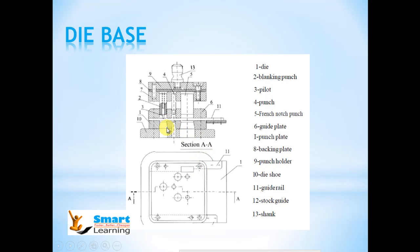You can see few punches here. This is a blanking punch with a pilot in it. This is a piercing punch. This is a notching tool. These are the fasteners which hold the parts accurately. Behind the punch there is a punch back plate, and there is a top plate on which a shank is mounted.